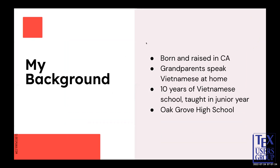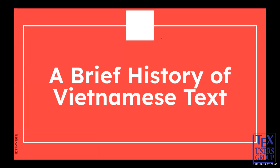Since I'm new to TUG, I'll begin by providing some background on myself. I was born and raised in San Jose, California. My grandparents speak Vietnamese at home the majority of the time, so I've been exposed to and surrounded by this language consistently throughout my life. I actually took 10 years of Vietnamese school from age 6 to 16, so I know how to read, write, and speak it. Last year, I also returned to volunteer teaching younger students Vietnamese, which was a pretty gratifying experience. I'll be entering my final year at Oak Grove High School in about less than a month. With that, let's dive straight into a brief history of Vietnamese text.